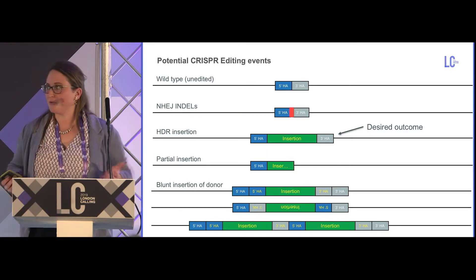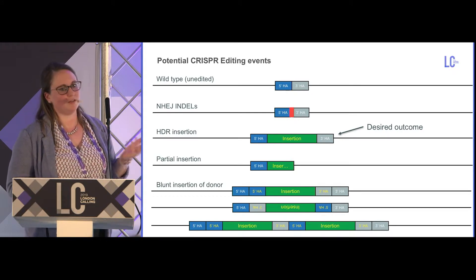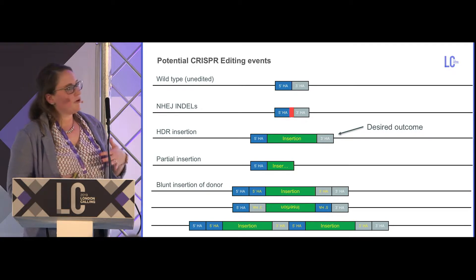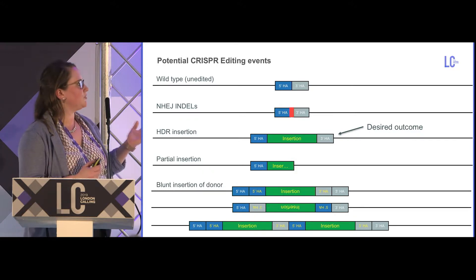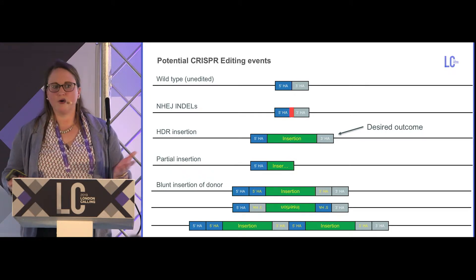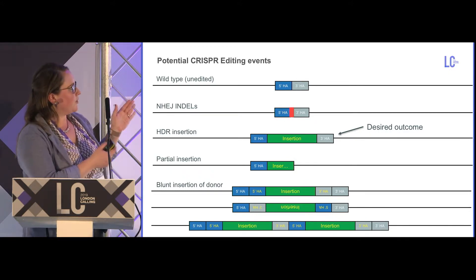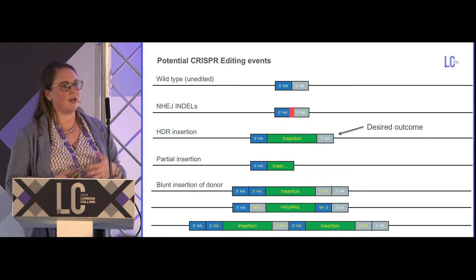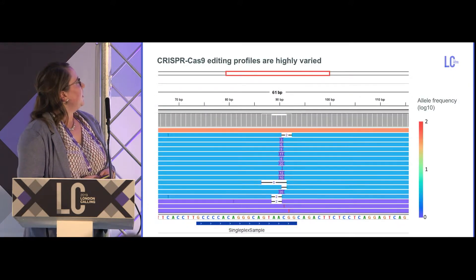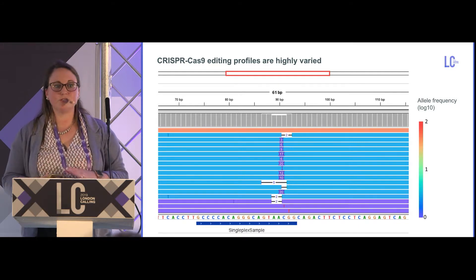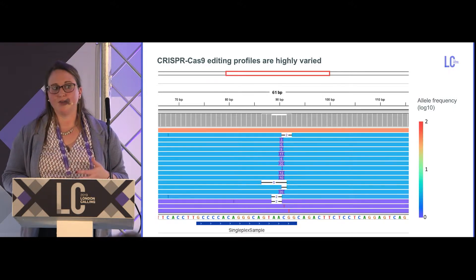You can also get the desired HDR insertion — our target outcome — where we've perfectly inserted the sequence without disrupting or duplicating the homology arms. In addition, there are unwanted partial insertions where just the 5' end was inserted, blunt insertions at the cut site causing duplication of homology arms in one orientation or reversed, or concatamerization where you get multiple insertion events of these donor oligos. The CRISPR-Cas9 indel profiles from NHEJ alone are really highly varied.